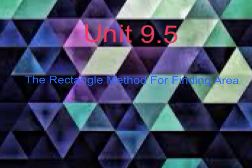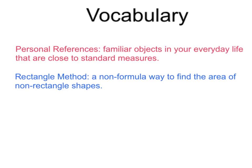This is Unit 9.5, the Rectangle Method for Finding Area. First, let's talk about some key vocabulary. Personal References are familiar objects in your everyday life that are close to standard measures. The Rectangle Method is a non-formula way to find the area of non-rectangle shapes.